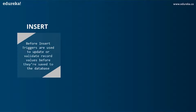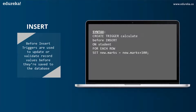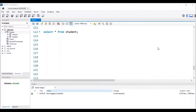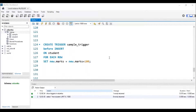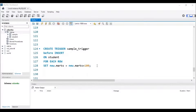The next operation is INSERT, and the first variant is BEFORE INSERT triggers. BEFORE INSERT triggers are used to update or validate record values before they are saved to the database. The syntax is: CREATE TRIGGER calculate BEFORE INSERT ON table_name FOR EACH ROW and the SET operation. I'll be using a student table with columns: student ID, first name, last name, address, city, and marks. I will be creating a trigger with the name sample_trigger. Here, the BEFORE INSERT trigger is used to set 100 extra marks for each student's marks column when a new student value is added.